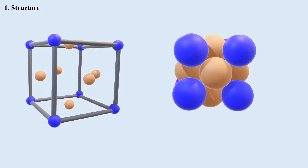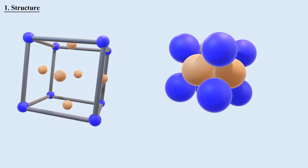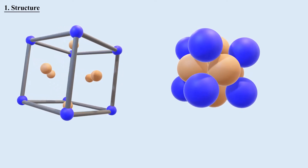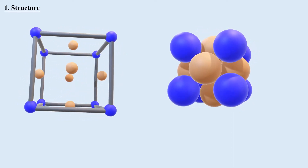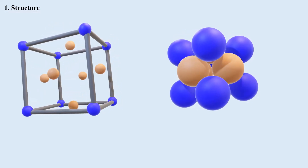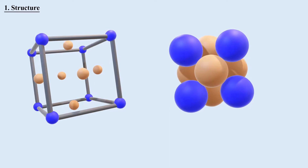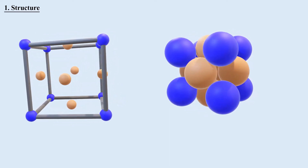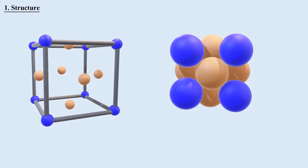In a FCC unit cell, eight atoms are placed at the eight corners of the cubic lattice and six atoms at the center of the six faces of the cube. In this unit cell, any face-centered atom is connected with the corner atoms of the same face. Therefore, the closest atoms of the face-centered cubic unit cell are those atoms placed at the face diagonal.